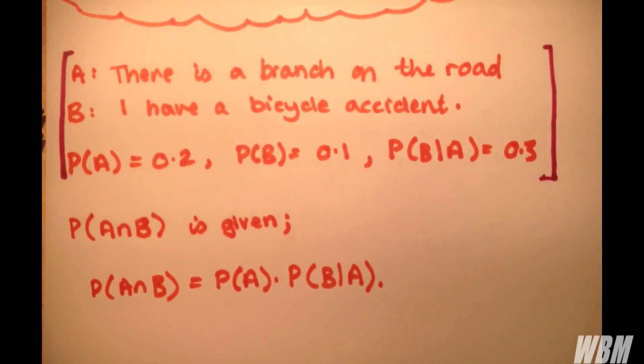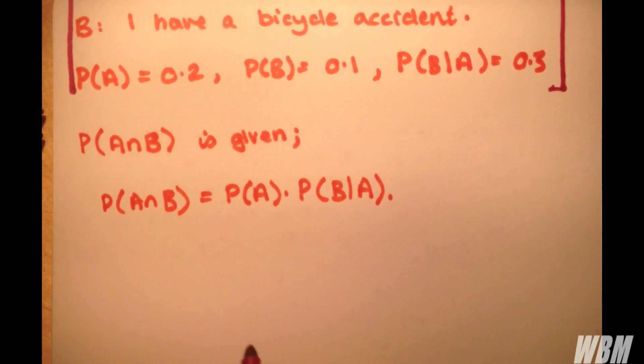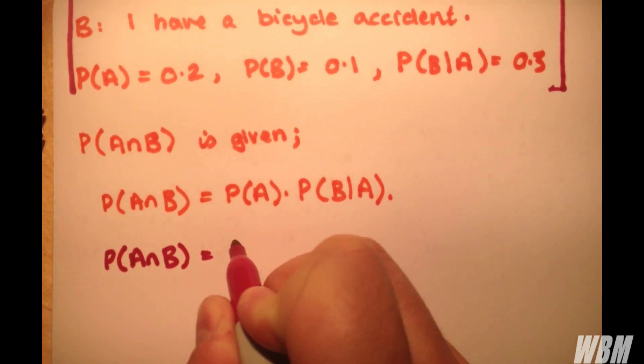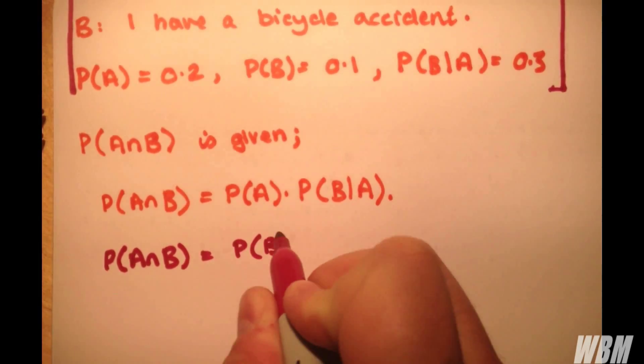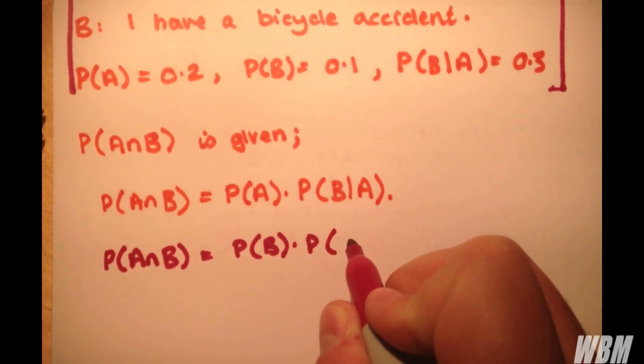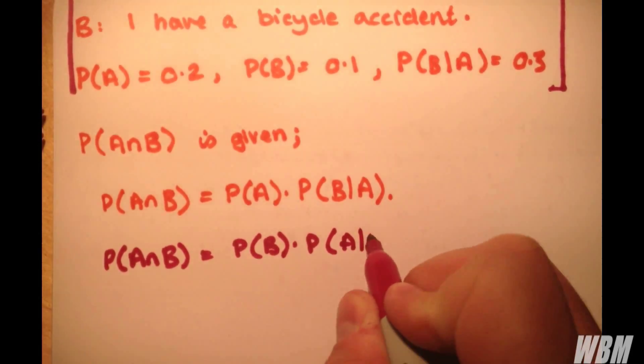Of course, we can write that the probability of A intersect B is also equal to the probability of B multiplied by the probability of A given B.